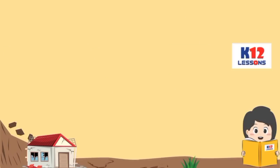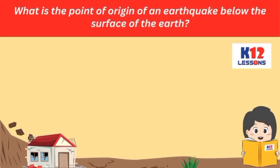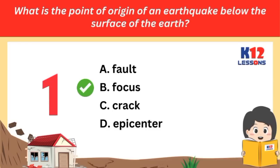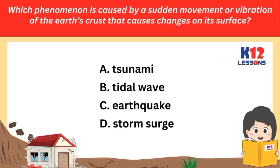Answer the following questions. What is the point of origin of an earthquake below the surface of the Earth? Which phenomenon is caused by a sudden movement or vibration of the Earth's crust that causes changes on its surface? A. Tsunami. B. Tidal wave. C. Earthquake. D. Storm surge.